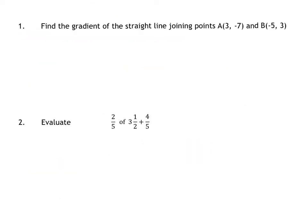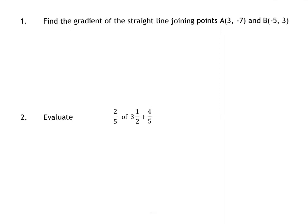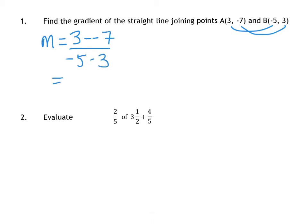So our first question is find the gradient of this line. So your gradient formula is y2 minus y1 over x2 minus x1. So y2 minus y1 is 3 minus minus 7, all over minus 5 minus 3. So you'll see that double negative there turns into a plus. So you've got 10 over negative 8. Simplify that down, so your gradient is 5 over 4.